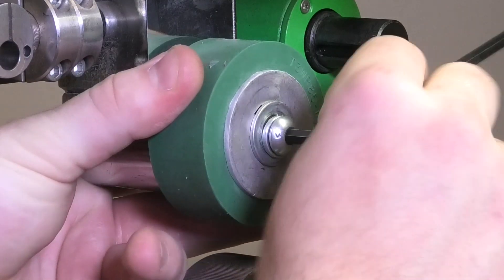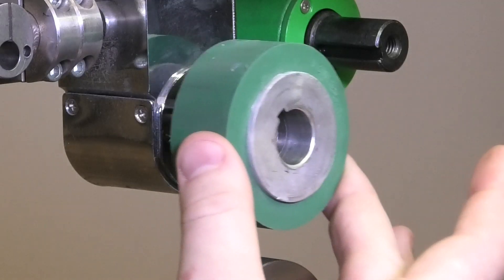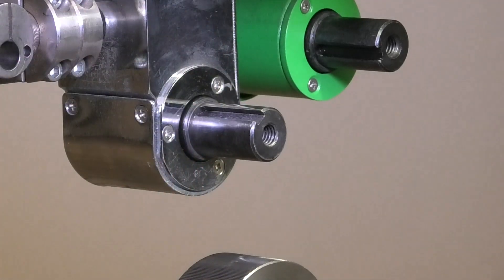First, I'm going to start by taking this button head bolt out of the top wheel using my allen wrench. We're going to pull off the wheel and we're also going to take this keyway out.